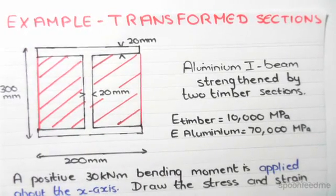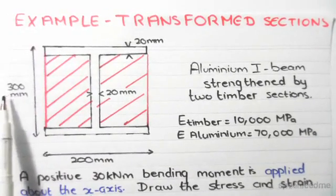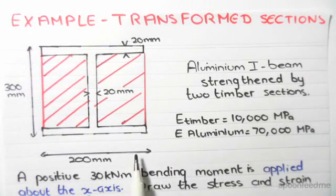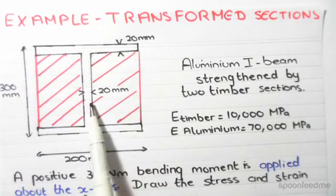The depth of our total section, from the bottom of the flange to the top flange, is 300 millimeters. The total width of this section is 200 millimeters. The thickness of the flanges is 20, and the thickness of the web is 20 as well.